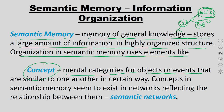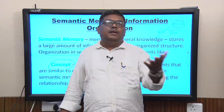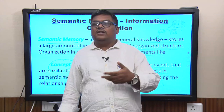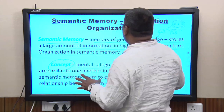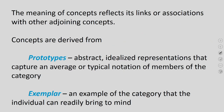Information is arranged in a highly organized structure using elements called concepts — mental categories for objects or events that are similar to one another. Concepts in semantic memory exist in networks reflecting the relationships between them — a semantic network. For example, within birds you may have talking birds versus non-talking birds, domesticated versus non-domesticated birds, and non-flying birds like emu or ostrich.